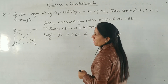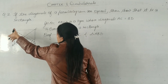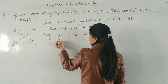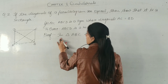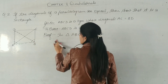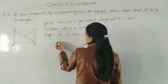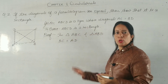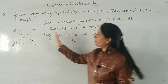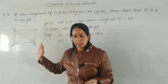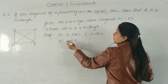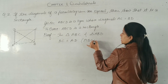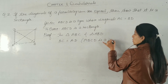In triangle ABC and triangle ABD, the first congruency condition: BC is equal to AD. In triangle ABC, BC = AD. Why is it equal? Because in a parallelogram, opposite sides are equal. This is why BC = AD, and the reason is that ABCD is a parallelogram.